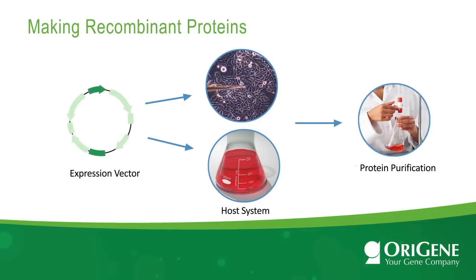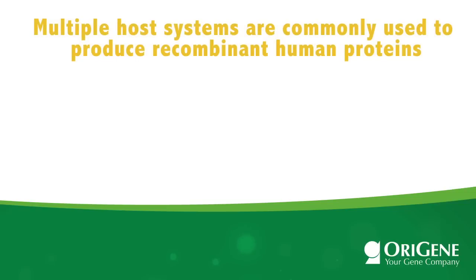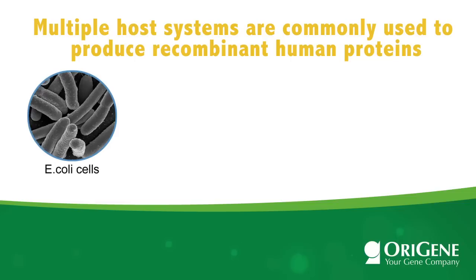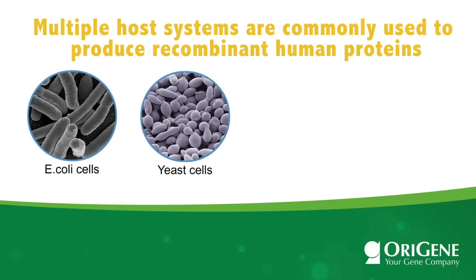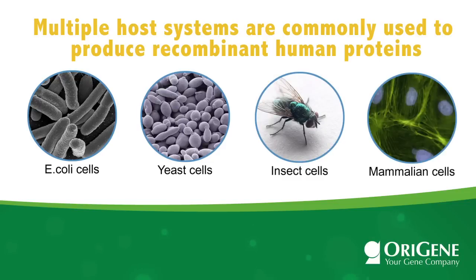Of these three elements, the expression host is of vital importance, as the biology of the host cells determines the characteristics of the recombinant protein produced. Multiple host systems are commonly used to produce recombinant human proteins, including E. coli cells, yeast cells, insect cells, and mammalian cells.